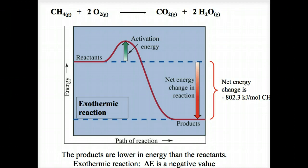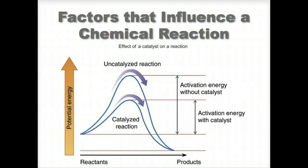The study of reaction rates is called chemical kinetics. The rate of a chemical reaction can be affected by many factors such as its activation energy, the nature of the reaction, concentration of the reactants, temperature, and presence of a catalyst. Many catalysts provide a surface on which reactants can meet. This changes the reaction pathway and lowers the activation energy.